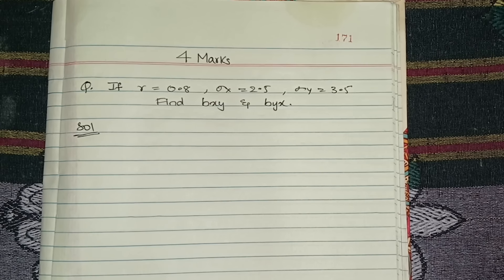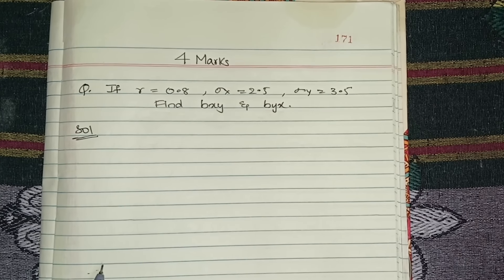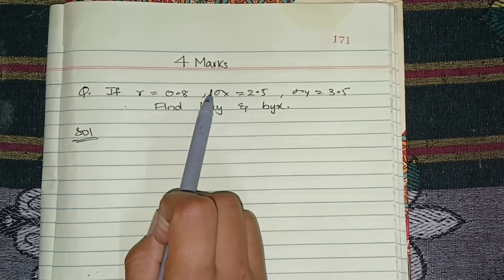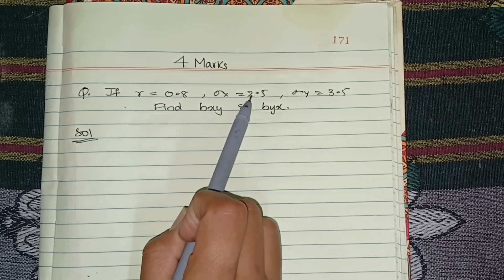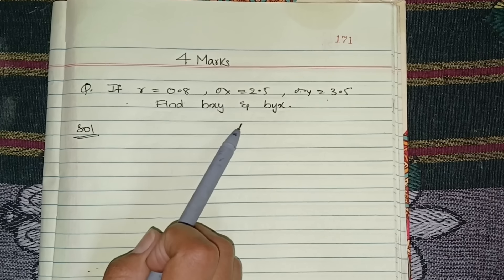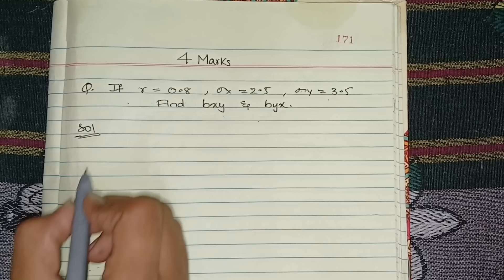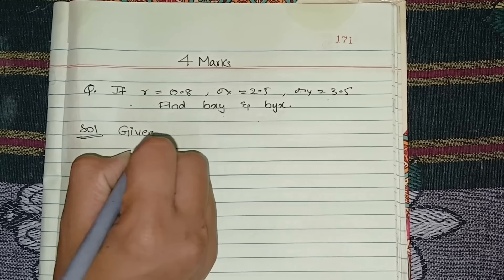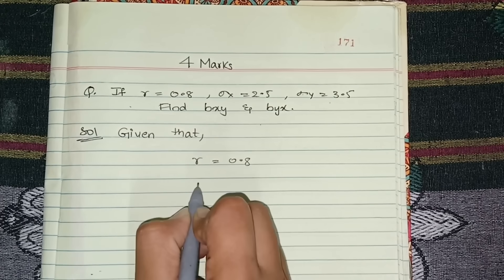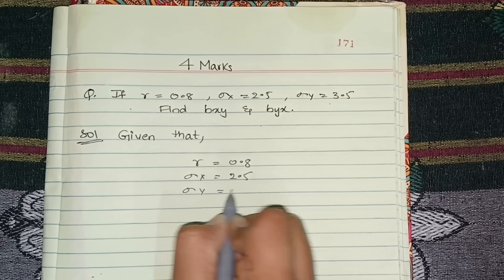From regression, this is the four marks important question. This type of method we can expect, one four marks question pakka in part A. If r is equal to 0.8, standard deviation of x is equal to 2.5, and standard deviation of y is equal to 3.5, they are asking us to find out bxy and byx. While writing the answer, first write 'given that' and list what they have given.